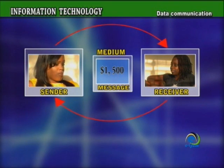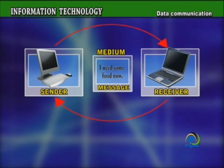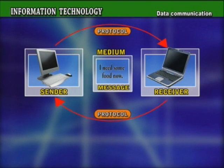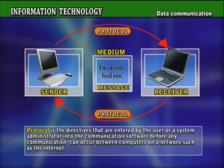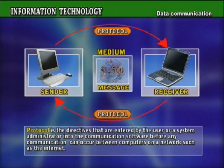The difference between the human communication model and that of data communication is the addition of protocol. Protocol is the directives that are entered by the user or a system administrator into the communication software before any communication can occur between computers on a network, such as the Internet.